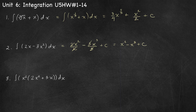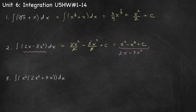Remember you can check your answers by taking the derivative. If I take the derivative of x squared minus x cubed plus c: the derivative of x squared is 2x, the derivative of x cubed is 3x squared, and the derivative of a constant is 0. So 2x minus 3x squared takes me back to my original problem.